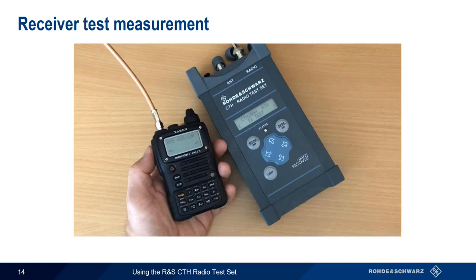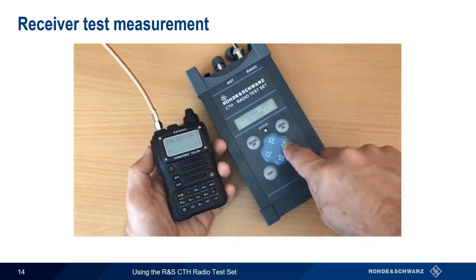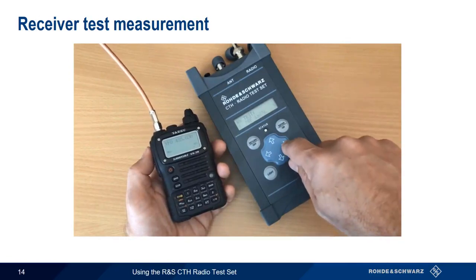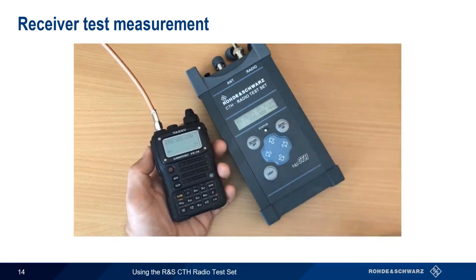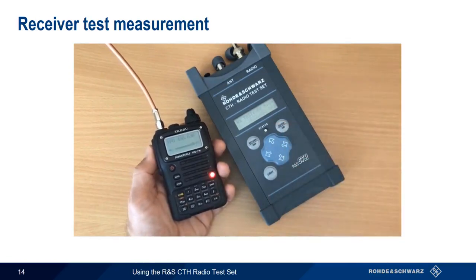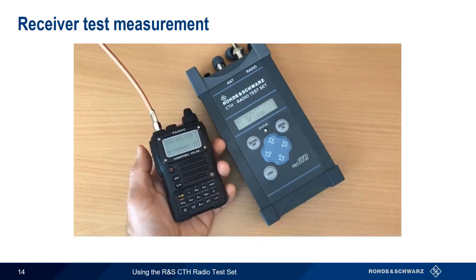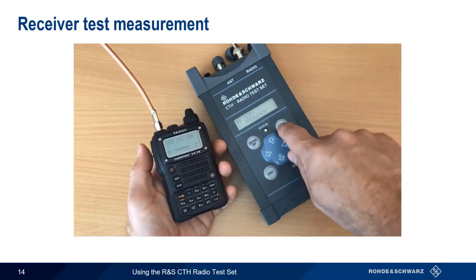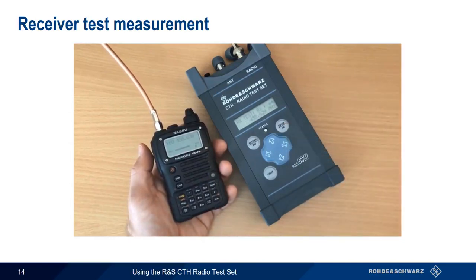Let's take a look at how this works. The radio under test is connected to the CTH radio connector and tuned to the desired frequency. When we enter RX test mode, we see the transmit frequency is set to our default of 25 MHz. After keying the attached radio, the CTH updates the transmit frequency, and when our radio switches back to receive, we can hear the received audio being transmitted on the correct frequency.